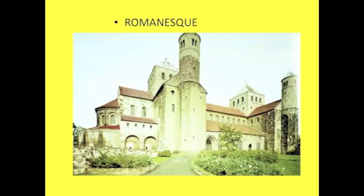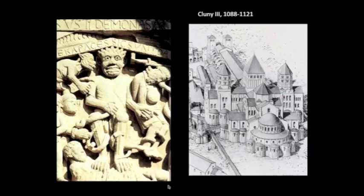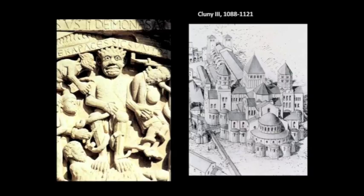Today we're going to continue talking about the Romanesque, and I just want to show you a couple of images from Cluny. This is the Church of Cluny, and next to it is some of the carving that decorates the facade of the church. One thing immediately jumps out looking at both of these images: they're beginning to behave on a symbolic or representational level in a way that's quite different from the architecture that we saw before.